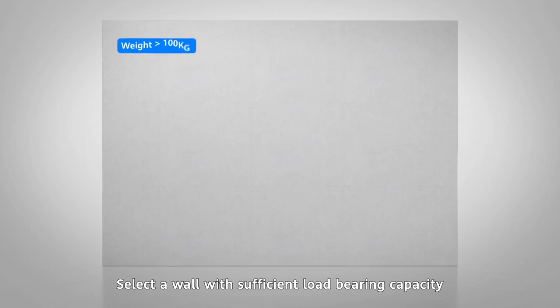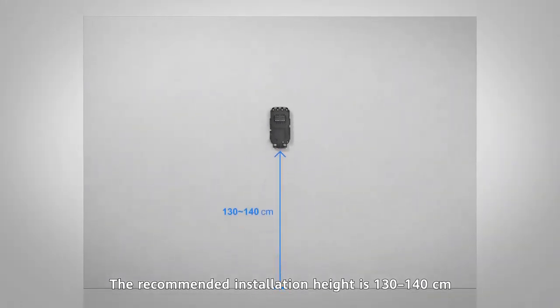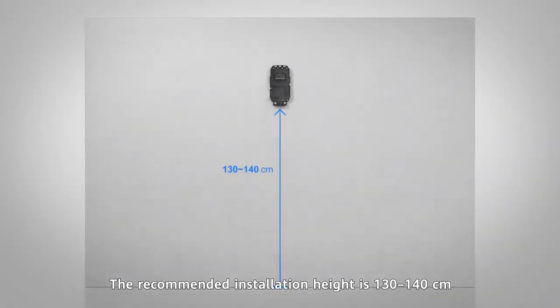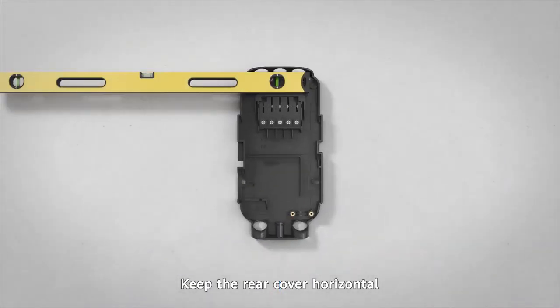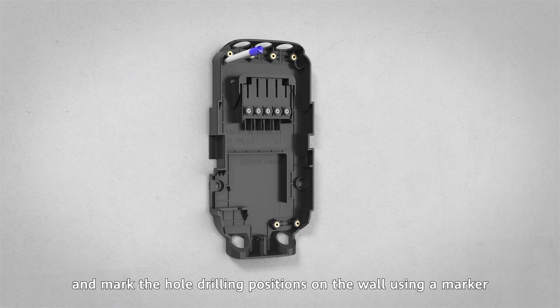Select a wall with sufficient load-bearing capacity. Place the rear cover against the wall. The recommended installation height is 130 to 140 centimeters. Keep the rear cover horizontal and mark the hole drilling positions on the wall using a marker.